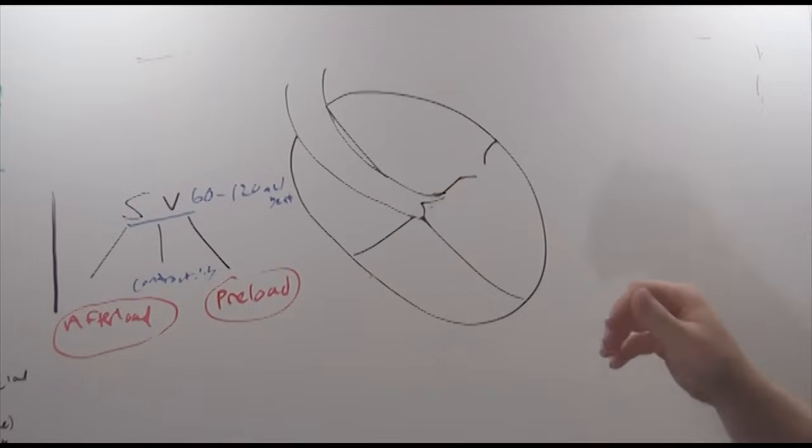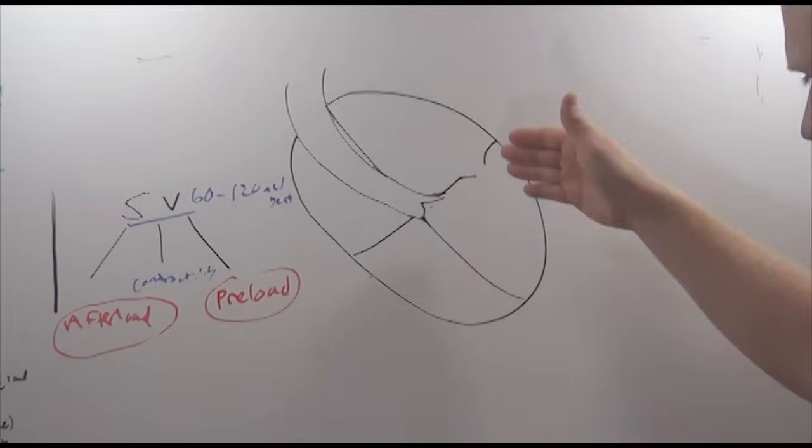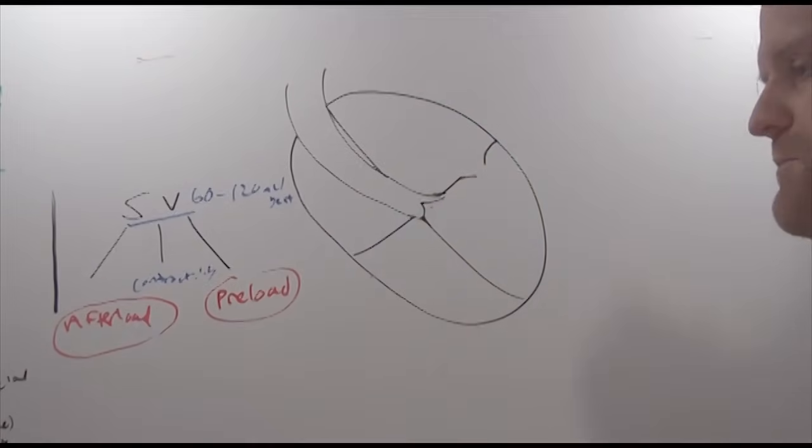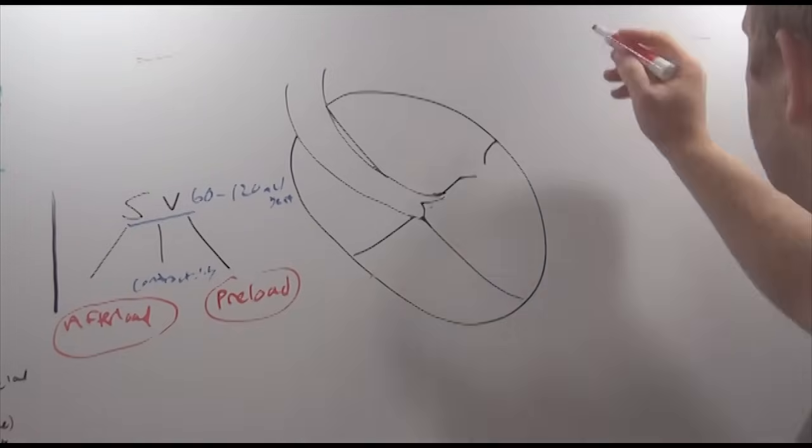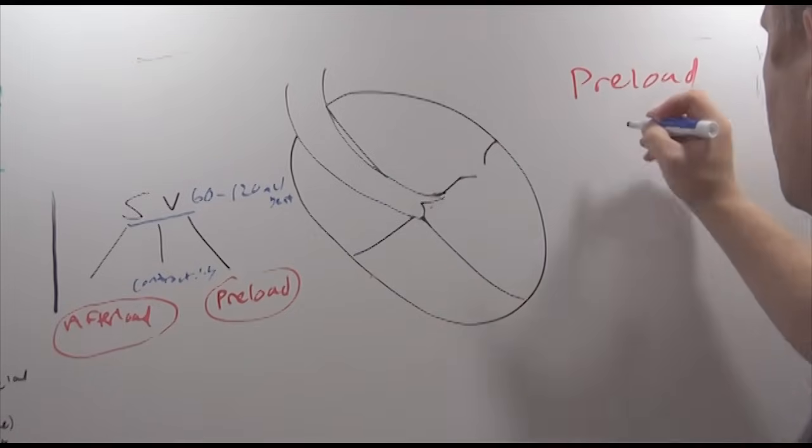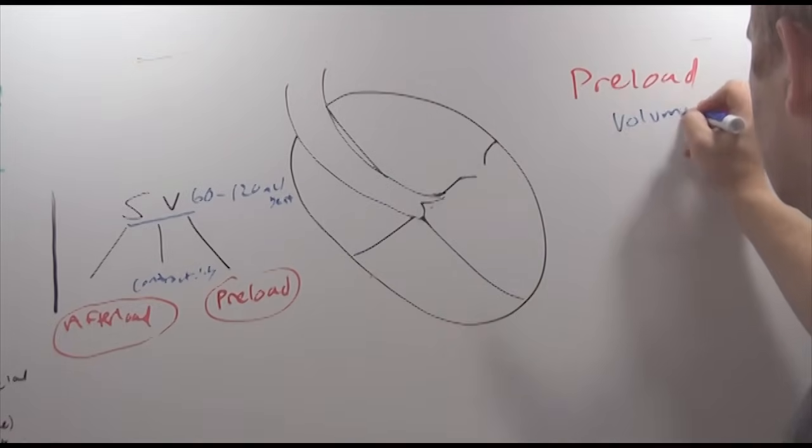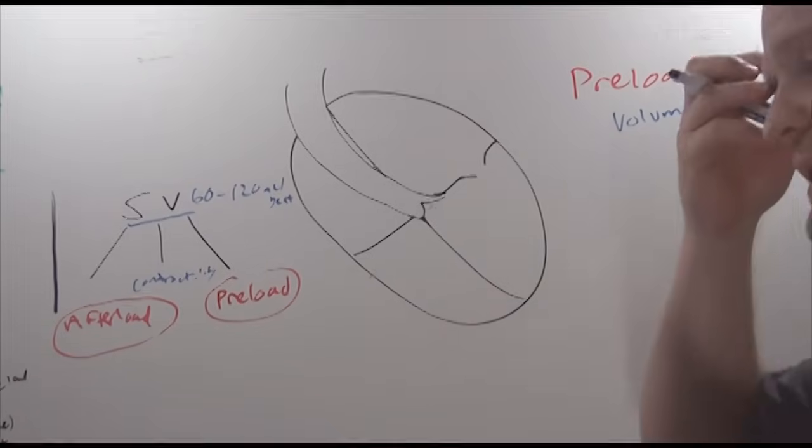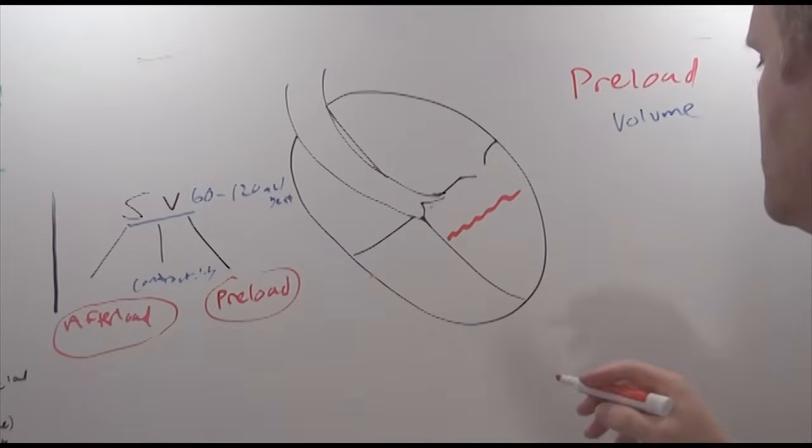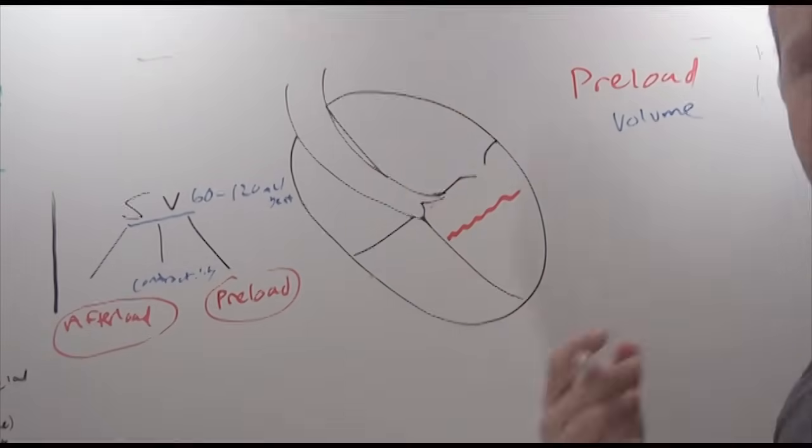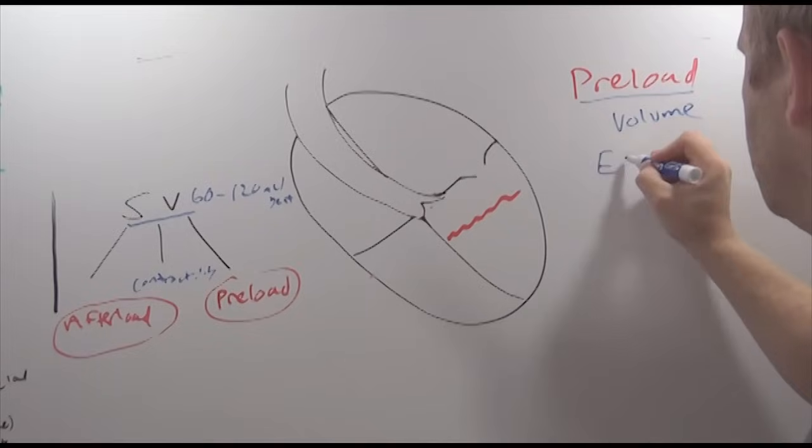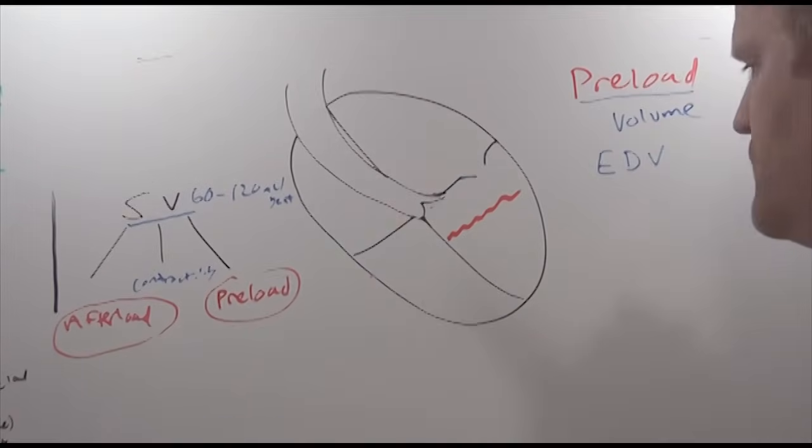So we'll go back over here to our heart. Over here on our heart, we have our atria, ventricles, and our aorta. So preload, when we talk about preload, what we're talking about is we're really kind of talking about a volume. So preload comes down to how much volume is in the ventricles at the end of diastole. So the number that we're really looking at here is end diastolic volume, or EDV.